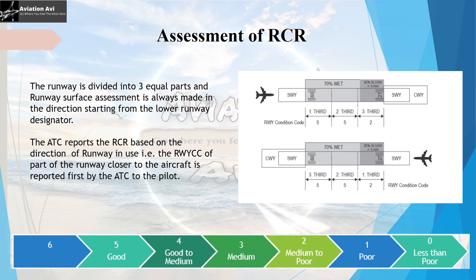Let us dive into the real assessment of RCR. Initially, the runway is divided into three equal parts lengthwise, and the runway surface assessment is always made starting from the lower runway designator. So if this is runway 09/27, the assessment of runway condition is started from the lower designator, that is runway 09R. This becomes the first third, this is the second third, and this is the third third.